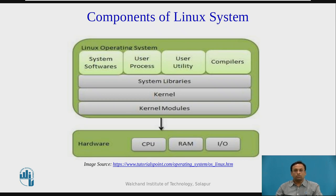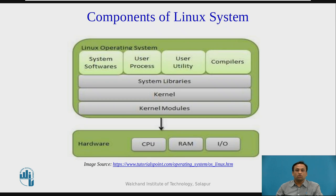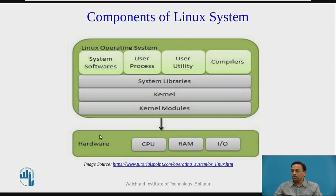We will now see the components of the Linux operating system. An operating system is a collection of software, each designed for a specific function. Linux OS has the following components: the kernel, kernel modules, hardware, and the Linux operating system also consists of system software, user process, user utility and compilers.